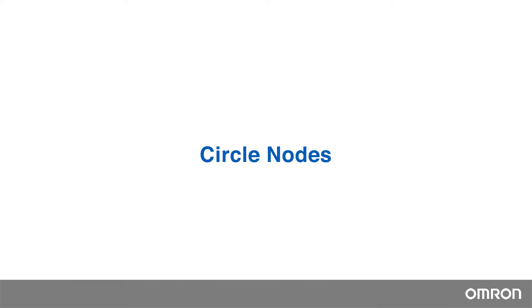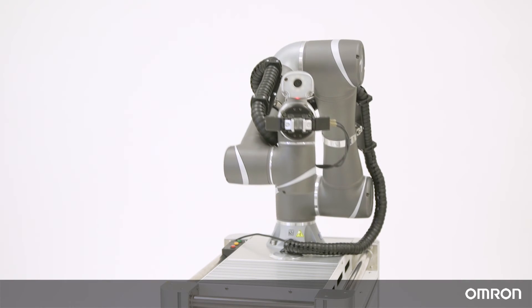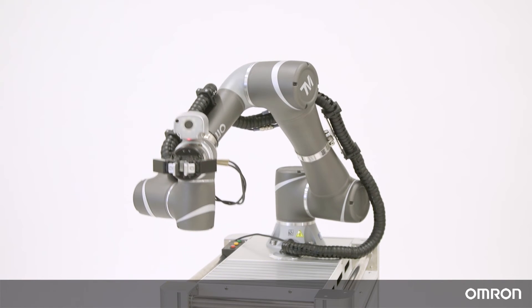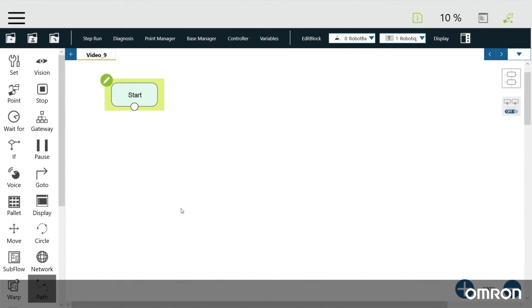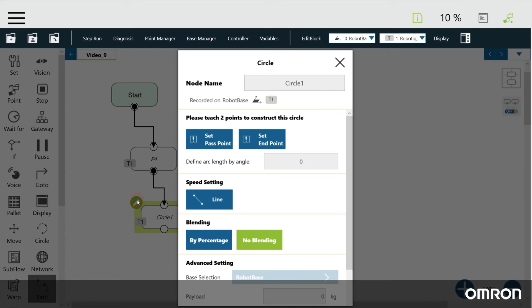Let's move on to the circle node. A circle node is useful when the cobot needs to move along a circular path. A circle requires three points. Step one is to create a starting point using a point node. Step two is to define the pass and end point in the circle node.